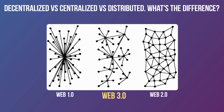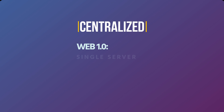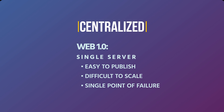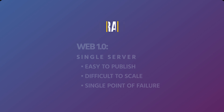Each node is able to validate what any person has previously put into the network or the application. We'll get into the technical complexities of this further in the class, but it is a major shift in thinking for developing technologies. To recap: centralized was basically web 1.0 — a single server, extremely difficult to scale, and a single point of failure.